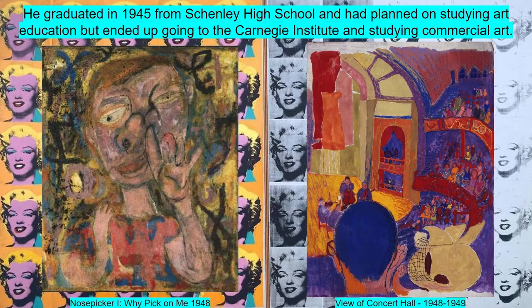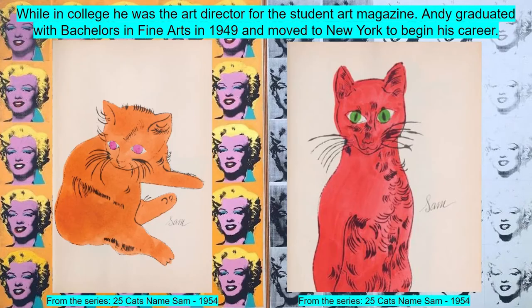He graduated in 1945 from Schenley High School and had planned on studying art education at the University of Pittsburgh. Instead, he ended up going to Carnegie Institute, now known as Carnegie Mellon University, and studied commercial art. While in college, he was the art director for the student art magazine, which might have been the first place any of his artwork was ever published. He was also a member of the Beaux Arts Society.